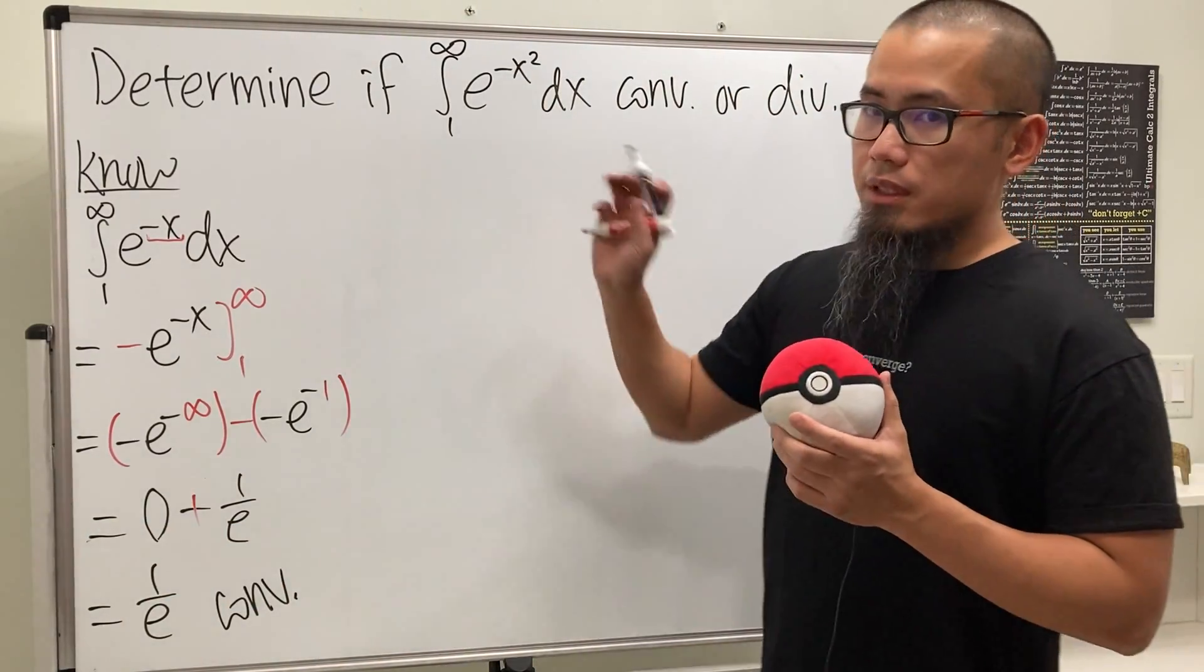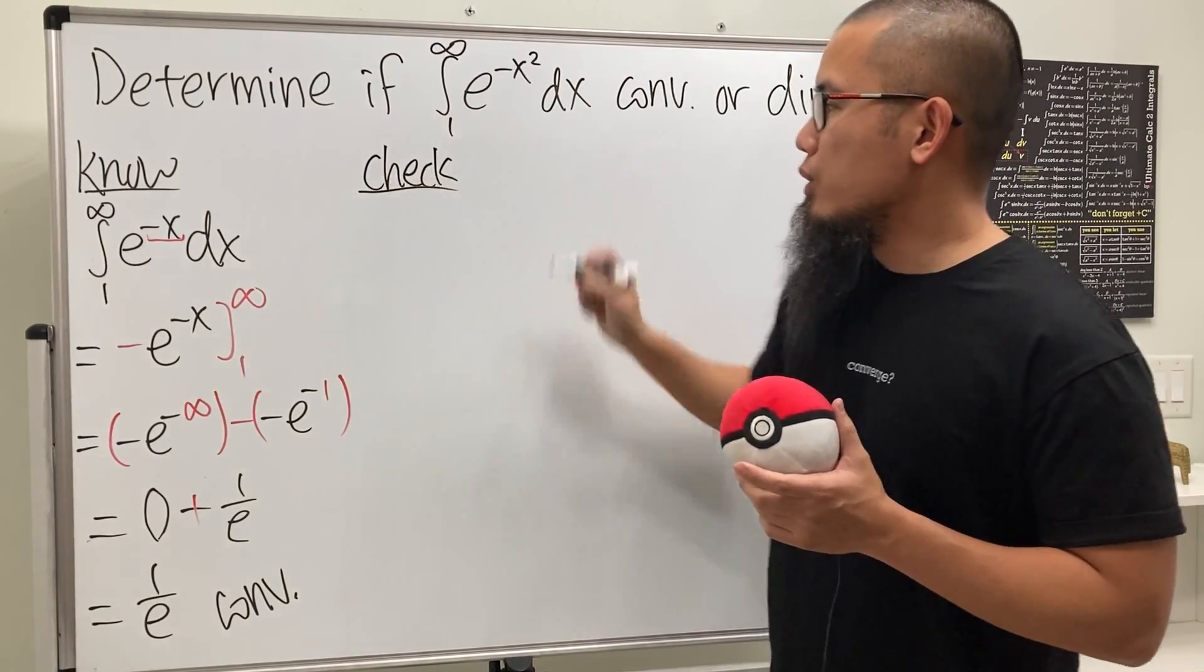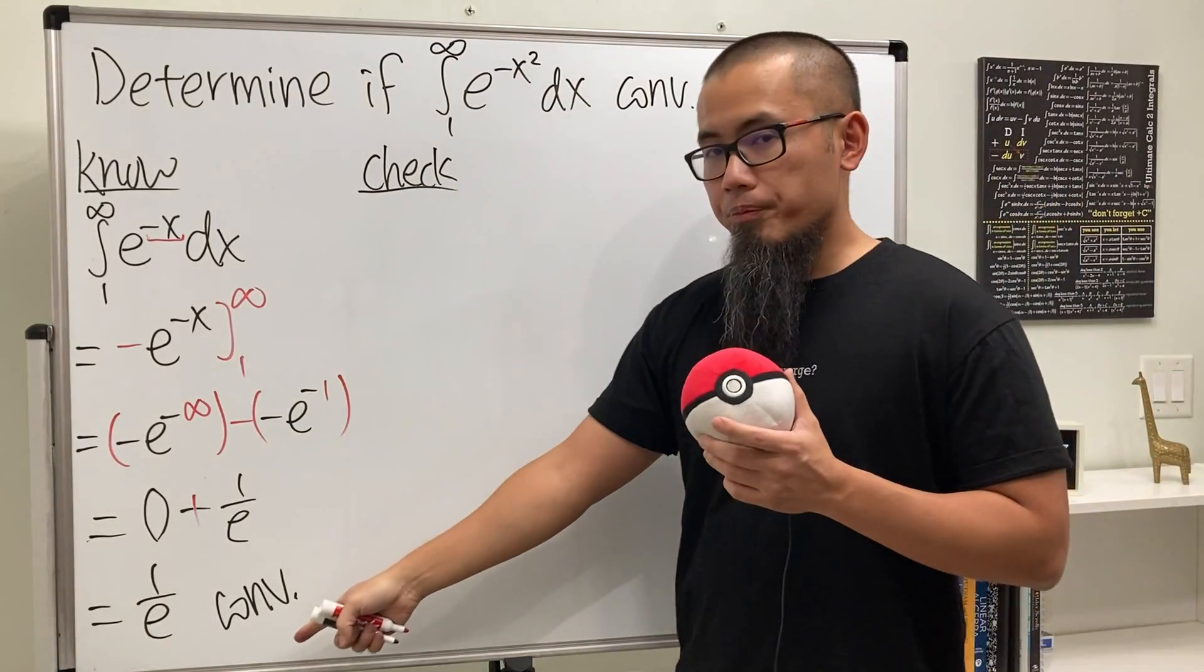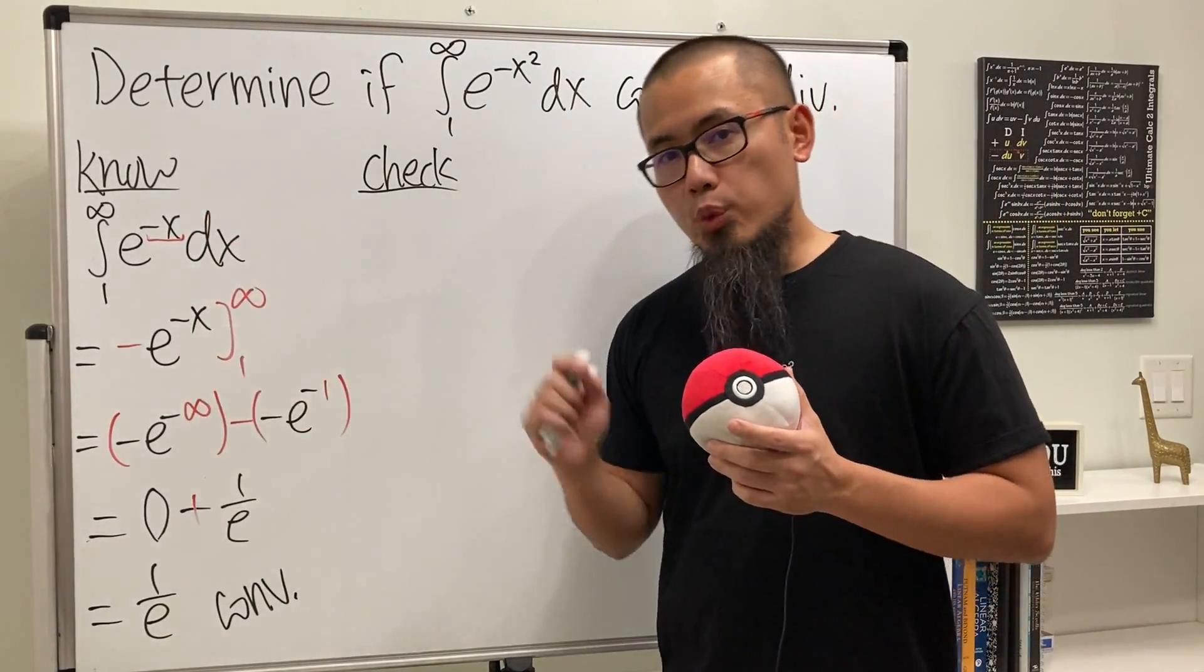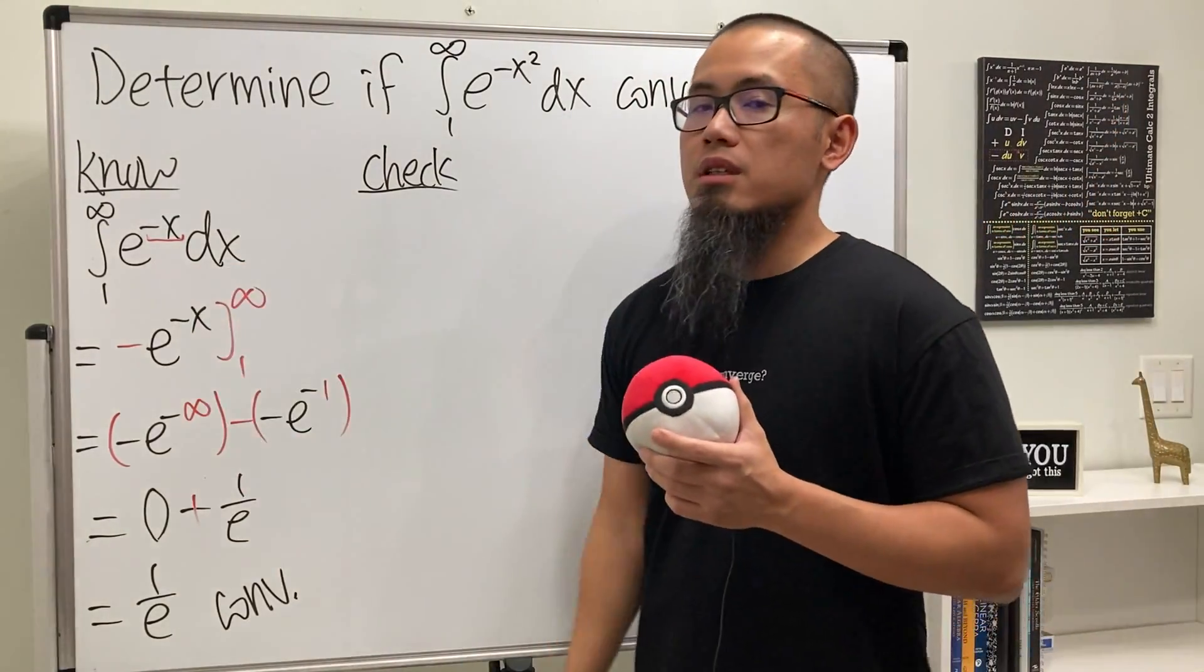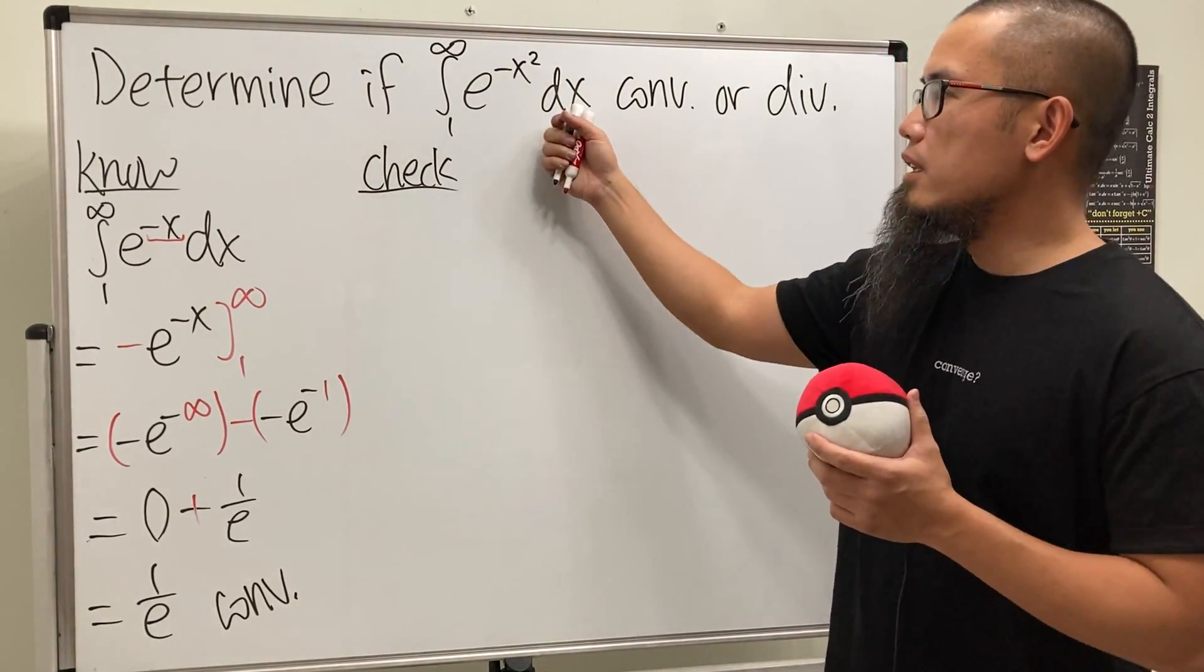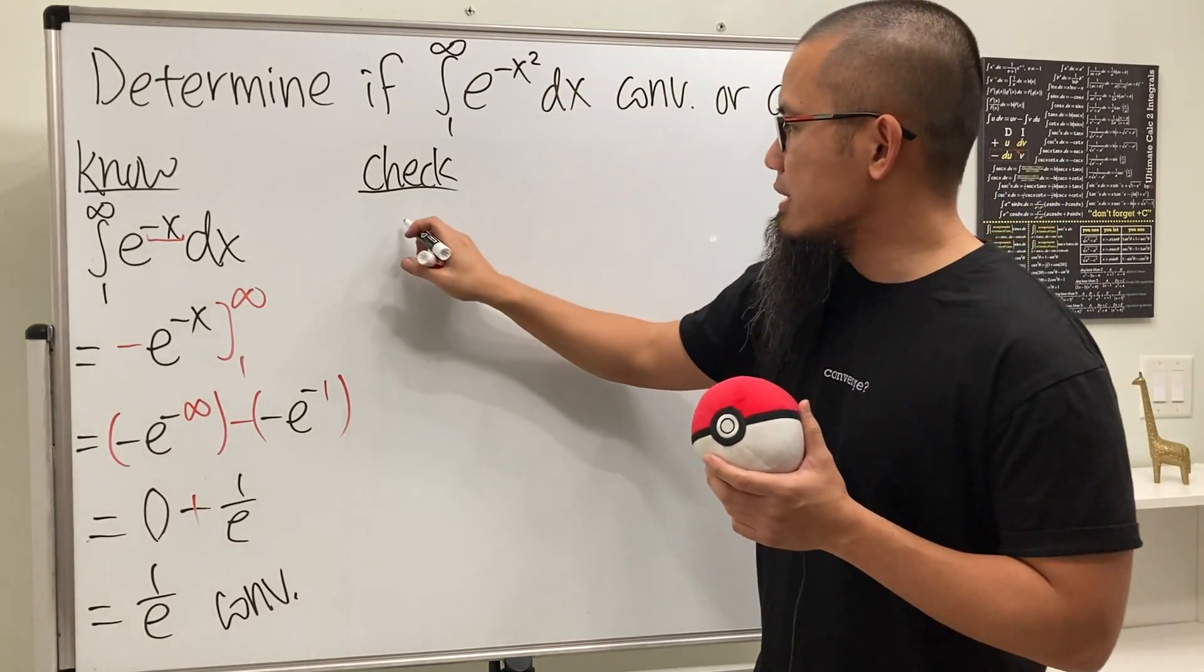Now, the second part that we do is we are going to do the check, the inequality check. Because we know a convergent integral, we wish to show that this right here is smaller than or equal to this convergent integral. If that's the case, then we can argue that this right here also converges. So let's go ahead and put this down.